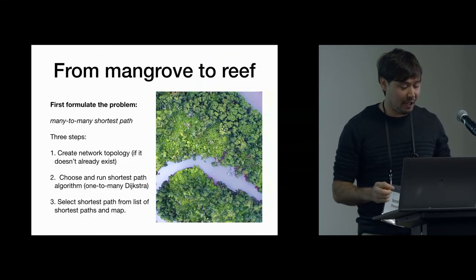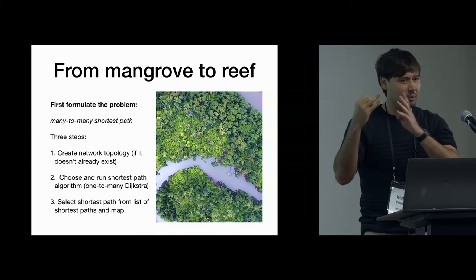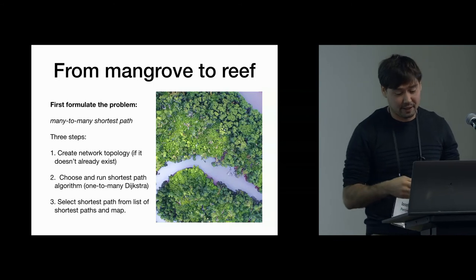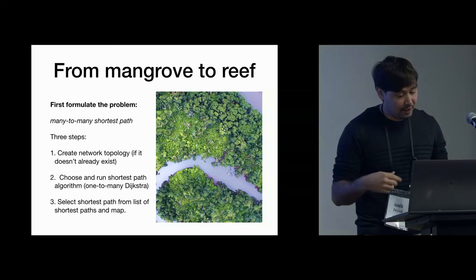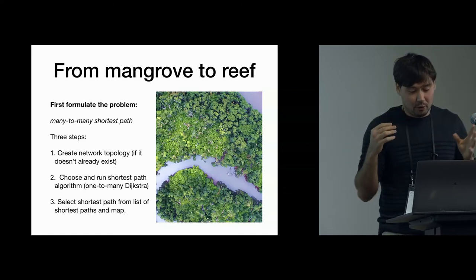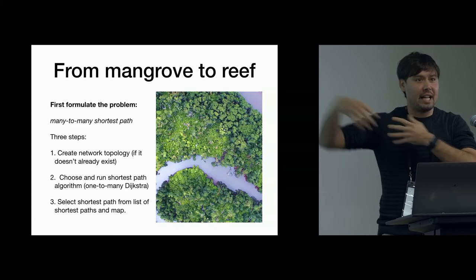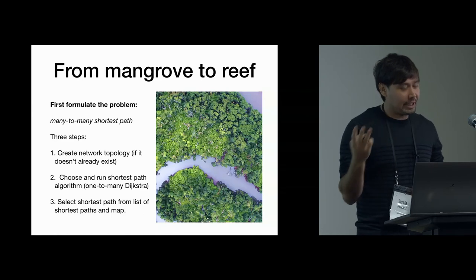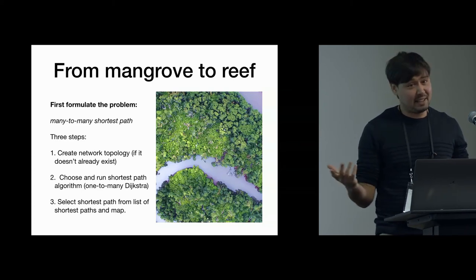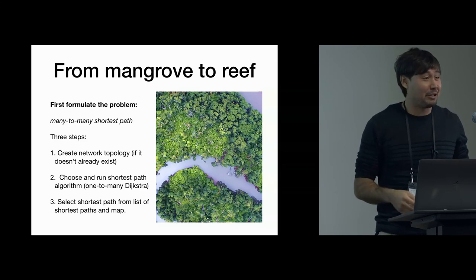Let's restate what we want to accomplish: find the shortest distance along a route that does not cross land or mangroves — assuming mangroves have really dense roots, making it hard for fish to navigate through. We want to get to any point on the reef, particularly the closest one, starting from a single point. Because we're a fish, we can extend in multiple directions — so we have a many-to-many problem where we can start along multiple edges and end up at any edge on a reef. From here there are three basic steps: create your network topology, do it in a way that makes sense for fishes, then choose your PG routing algorithm and select the shortest path.